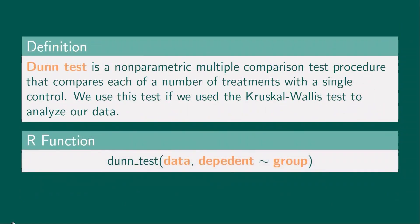Finally, Dunn Test is a non-parametric multiple comparison test procedure that compares each of a number of treatments with a single control. We use this test if we use the Kruskal-Wallis test to analyze our data. The R function is given below. The dunn_test() function allows us to perform the Dunn Test in RStudio using the rstatix package. The data argument is where the data are stored. Dependent contains the dependent variable, whereas Group contains the grouping variable, also known as the independent variable.